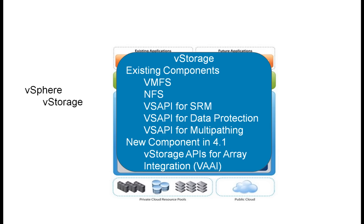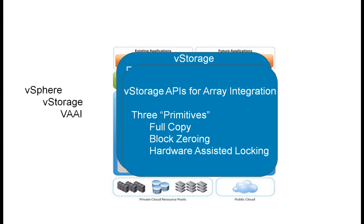VAAI is a new component of vStorage consisting of three primitives: full copy, block zeroing, and hardware-assisted locking. VAAI offloads these functions that are more efficiently performed on the storage array, freeing server and network resources.